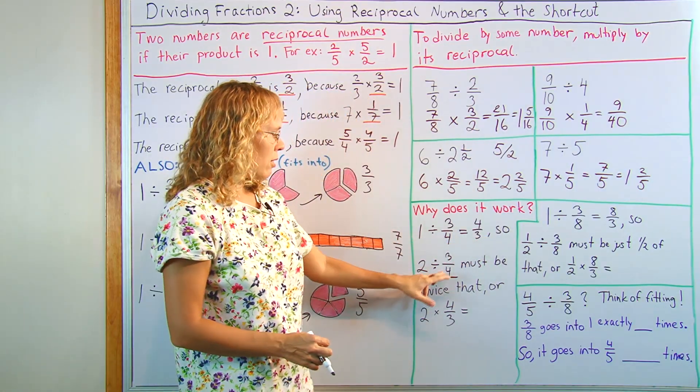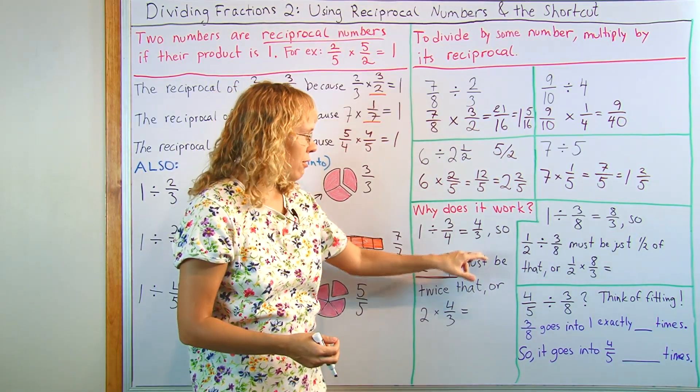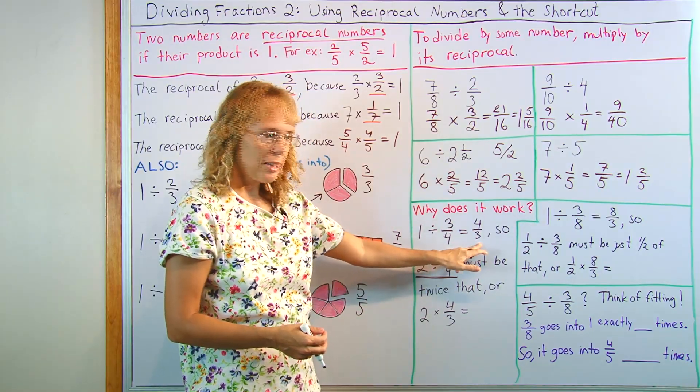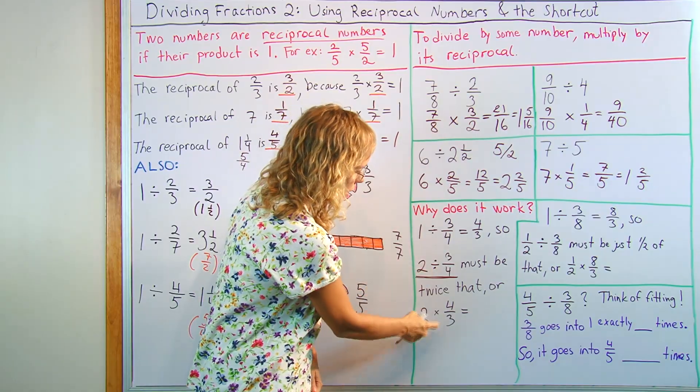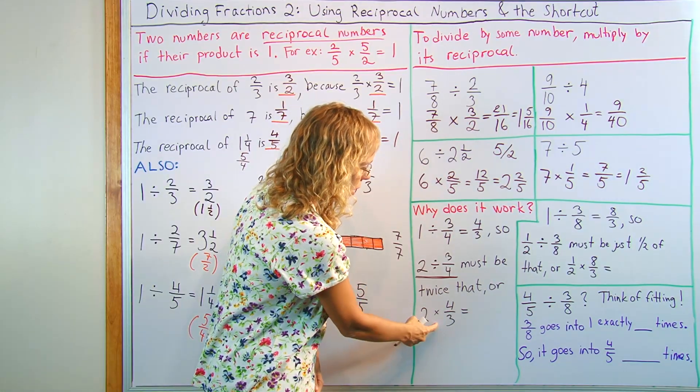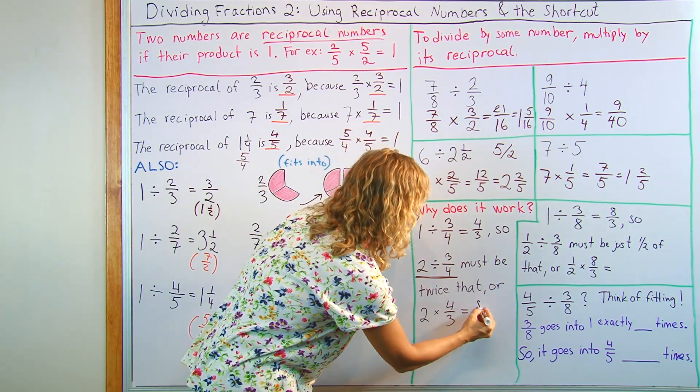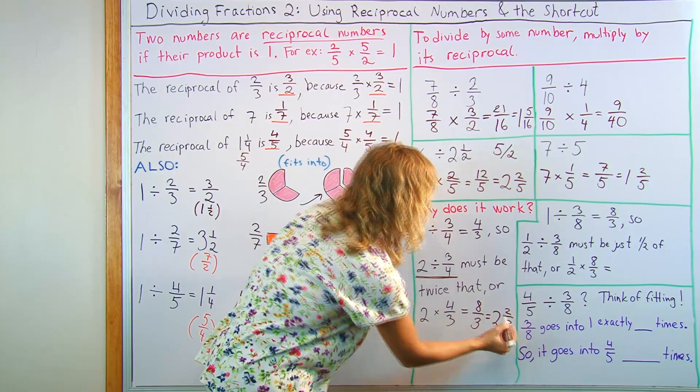And so, therefore, three-fourths fits into two pies double as many times as it fitted into one. So the answer must be two times that. Right? Two times four-thirds. But that is, as you compare this and this, division changed to multiplication and the three-fourths was flipped. Right? And so then we get eight-thirds, which is two and two-thirds times.